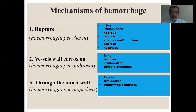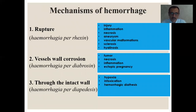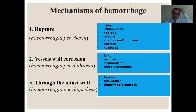There are three mechanisms of hemorrhage. First, rupture — hemorrhagea per rhexin — due to rupture of the blood vessel wall during injury, inflammation, necrosis, aneurysms, vascular malformations, sclerosis, and hyalinosis. Second mechanism is hemorrhagea per diabrosin — corrosion of the vessel wall — during the influence of tumor cells, necrosis, inflammation, and ectopic pregnancy. Third type is hemorrhagea per diapedesis — through the intact wall — by hypoxia, intoxication, and hemorrhagic diathesis.